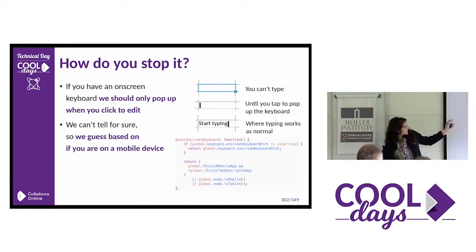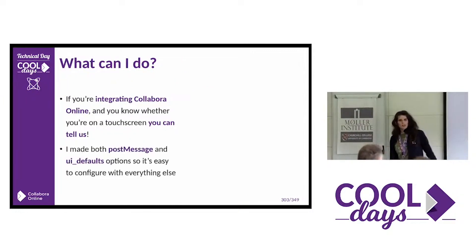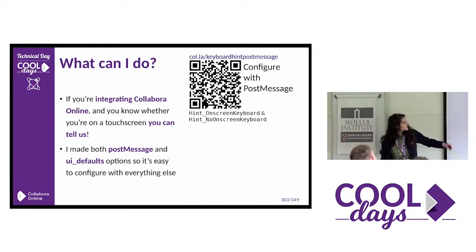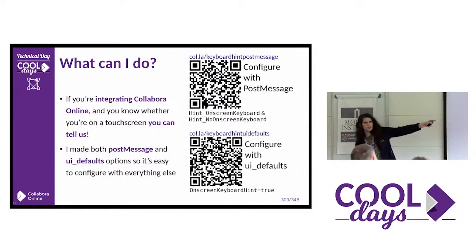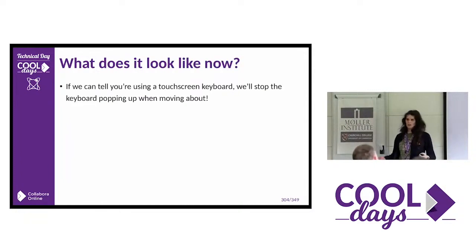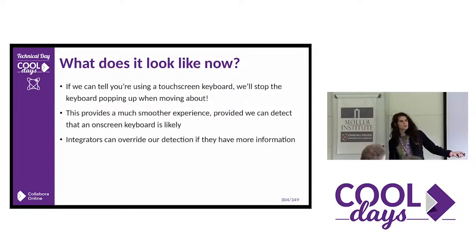We can't tell for sure, unfortunately, so we guess based on whether you're on a mobile device. Or, if you're an integrator, you can tell us if you know. I made both a post message and UI defaults — these are probably the things you're already using to configure CollaborOnline. The hint on-screen keyboard and hint no on-screen keyboard settings are available. If you follow these QR codes or links, this will tell you how to do that. So if you're on an integrator that has supported this, or if we detect that you're likely to have an on-screen keyboard, we'll stop the keyboard popping up when you move around — you'll have to click. This is much smoother. Integrators, you can override our detection if you know we're wrong.